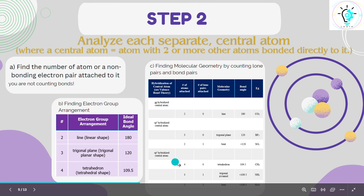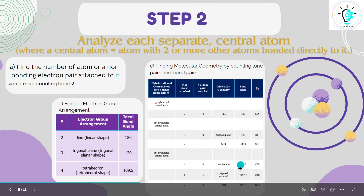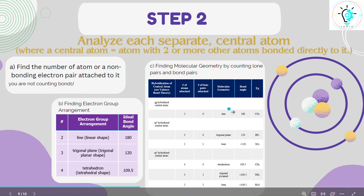If the central atom has four attachments and no lone pair, it will have a tetrahedral shape — for example, methane. If it has three atoms attached but one lone pair, then it becomes trigonal pyramidal, like the pyramidal structure in ammonia. And if it has two bond pairs and two lone pairs, we get a bent shape again.